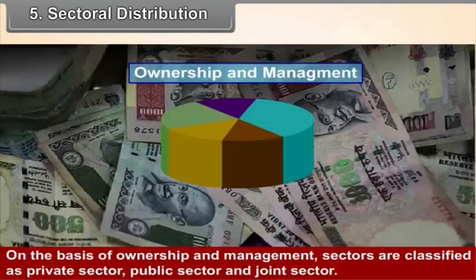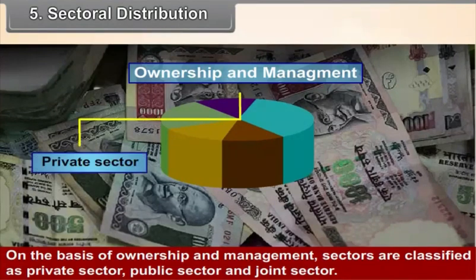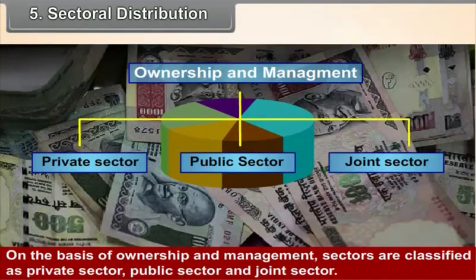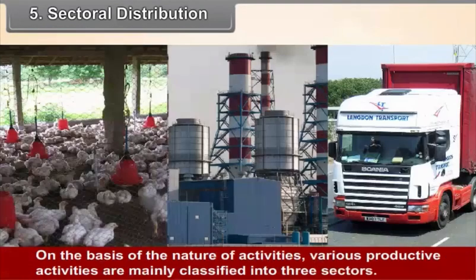5. Sectoral Distribution. On the basis of ownership and management, sectors are classified as private sector, public sector, and joint sector. On the basis of the nature of activities, various productive activities are mainly classified into three sectors.